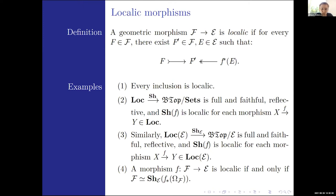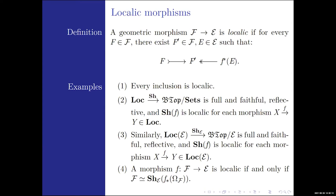By a result from Joyal and Tierney, every localic geometric morphism has its domain topos of the form where F is the internal sheaves on the internal locale given by the direct image of the sub-object classifier. This result gives us a very nice description of what the internal locales should be corresponding to a localic geometric morphism.